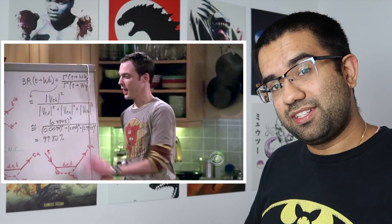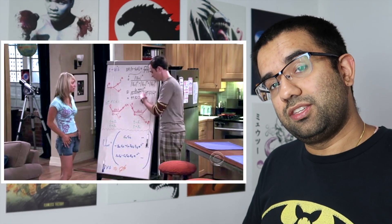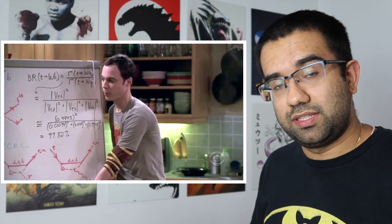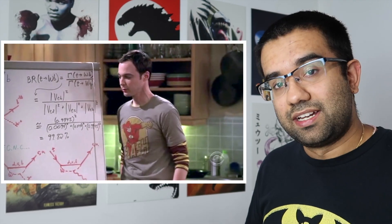The Born-Oppenheimer approximation tells us that you can treat the wave functions of protons and neutrons much differently than the wave functions of electrons, because electrons have much smaller mass. This becomes way more apparent when you get to much bigger molecules or elements, because now the differences between the nuclei and the electrons is way larger.